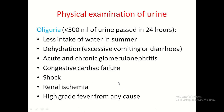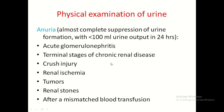Oliguria is less than 500 ml of urine in 24 hours. Causes include reduced water intake in summer, dehydration due to excessive vomiting or diarrhea, acute and chronic glomerulonephritis, congestive cardiac failure, renal ischemia, and high-grade fever. Anuria is almost complete suppression of urine formation — less than 100 ml in 24 hours. Causes include acute glomerulonephritis, terminal stage of chronic renal disease, crush injury, renal ischemia, tumours, renal stones, and after mismatched blood transfusion.